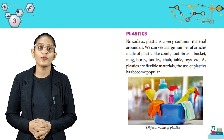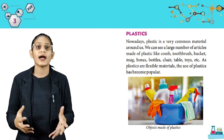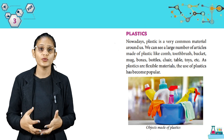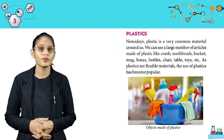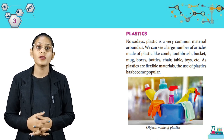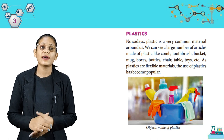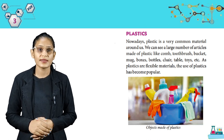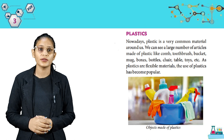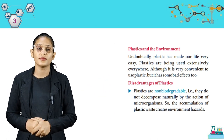Nowadays, plastic is a very common material around us. We can see a large number of articles made of plastic like comb, toothbrush, bucket, mug, boxes, bottles, chair, table, toys, etc. As plastics are flexible materials, the use of plastics has become popular. Look at the picture — objects made of plastic.